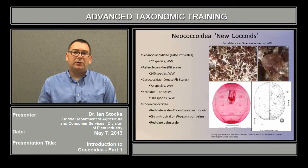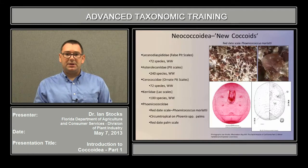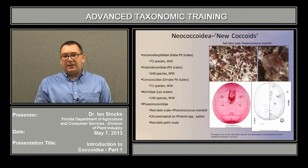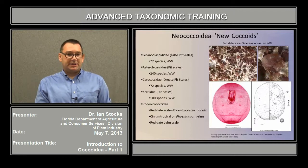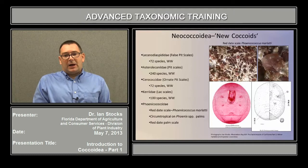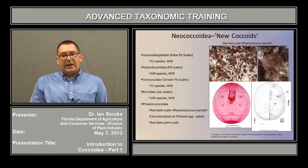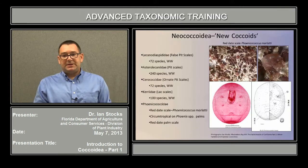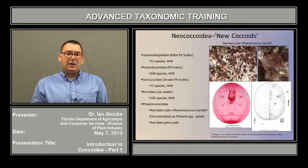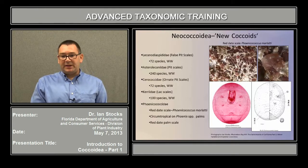Some of the less well-known Neococcoidea are the Lecanodiaspididae, with the false pit scales; the Asterolecaniidae, the pit scales; the Cerococcidae, the ornate pit scales; and the Keriidae, the lac scales. And then there's the single species Phoenicococcus marlatti, known worldwide as the red date scale in the family Phoenicococcidae. This is circumtropical, and it's found exclusively on species of Phoenix palms.